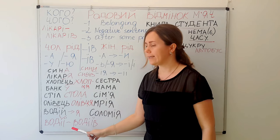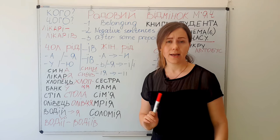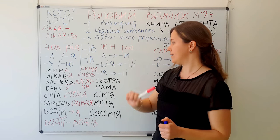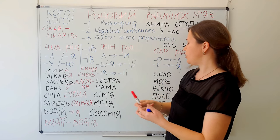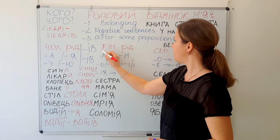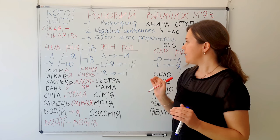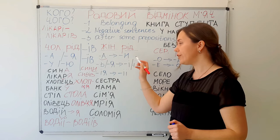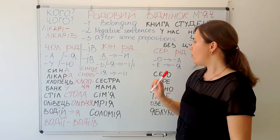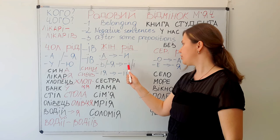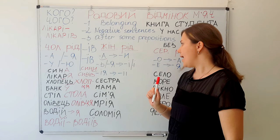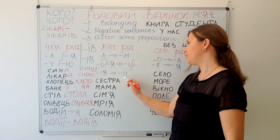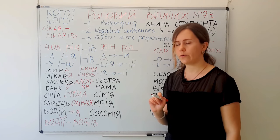I hope everything is clear — if not, don't forget to ask. This is just an introduction and we will have several more lessons about the genitive case. Now let's move to жіночий рід — feminine gender. If a feminine noun has the ending А, we change it to И for the родовий відмінок. Or if we have the soft sign or Я, we change it to І or ЙІ.